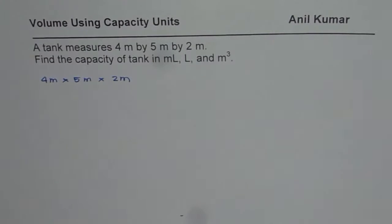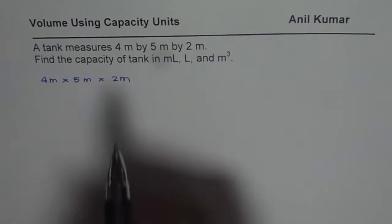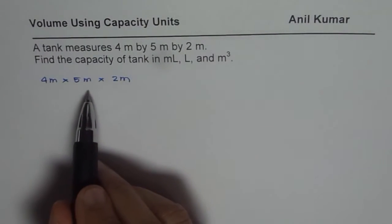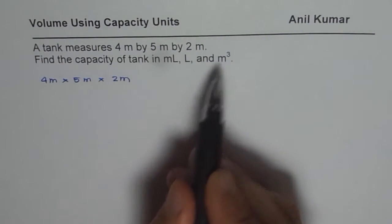The three dimensions of this rectangular prism type of tank is given to us. We need to find its capacity, that is volume, in three different units: milliliters, liters and meter cube.